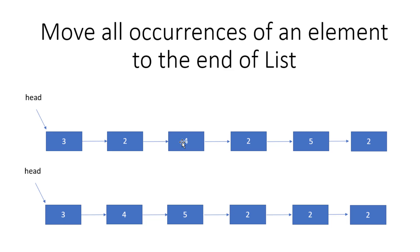We'll have one variable 'node' pointing to the current node, one 'previous' pointing to the previous node, and one 'next' pointing to the next node. First, we take the next node into a variable, then put the matching node at the end of the linked list, make its next null, and reassign the linking. If the element doesn't match the given value — like if the current node is 4 — just update previous and node to move forward.